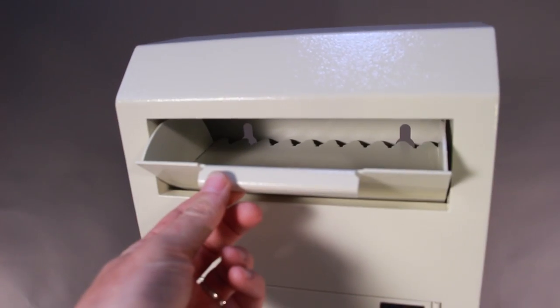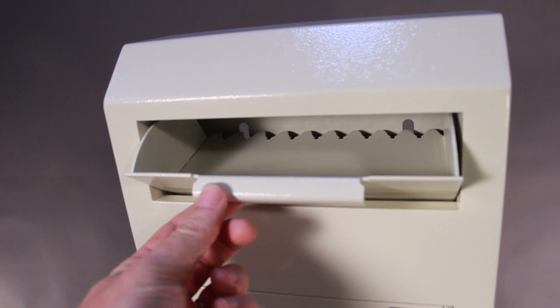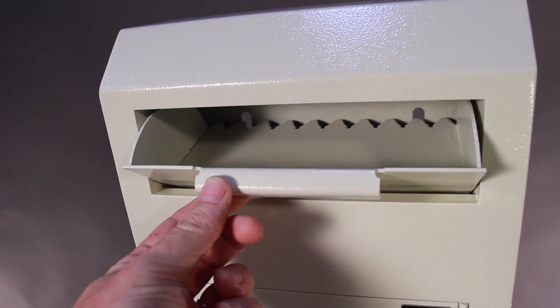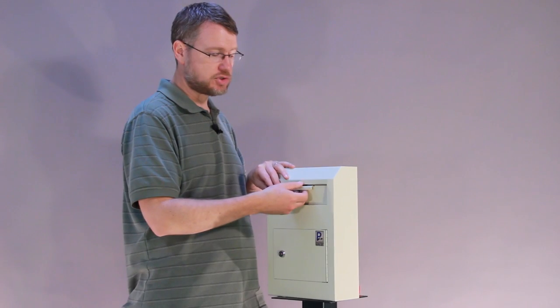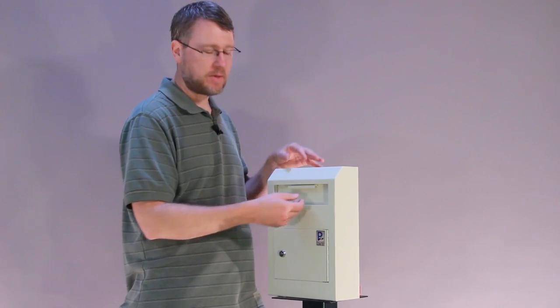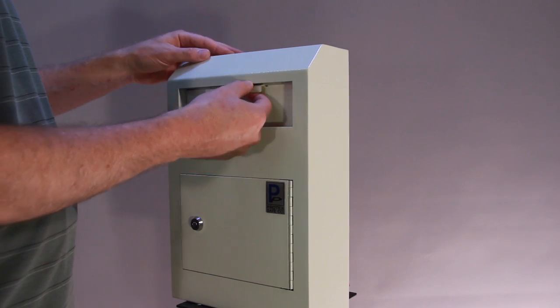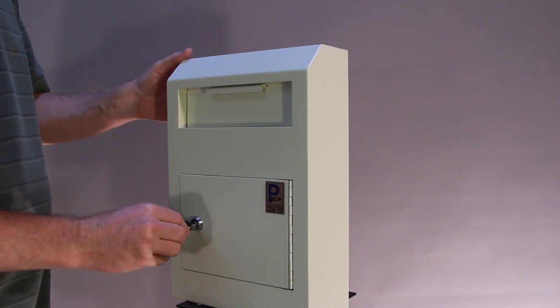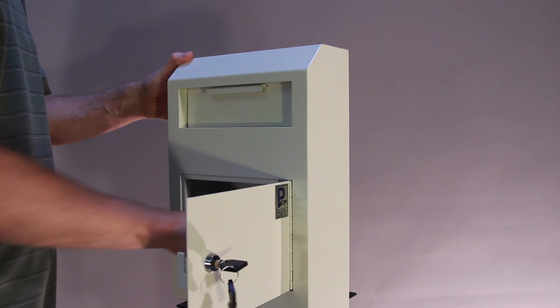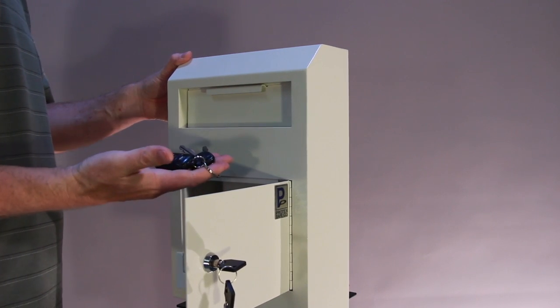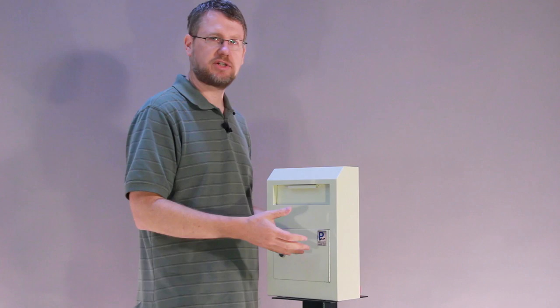And if you look down inside there, there's actually an anti-fishing device. What that device does is there's teeth that are sticking out there, and when someone tries to use like a coat hanger or a string with something sticky on the end of it, and they try to drop it down to pull something back out, those teeth are going to catch it. When you're pulling it up, they're going to be caught in between those teeth and knocked back down. So this is really a secure drop box.